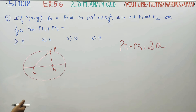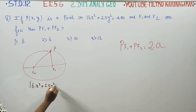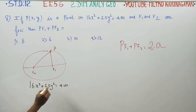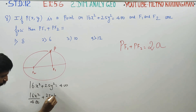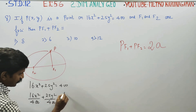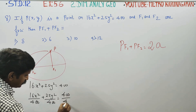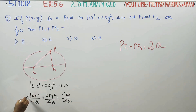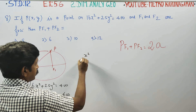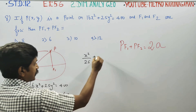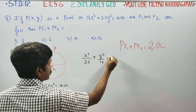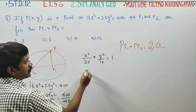Starting with 16x² + 25y² = 400, divide all terms by 400: 16x²/400 + 25y²/400 = 400/400. Cancelling, you get x²/25 + y²/16 = 1.